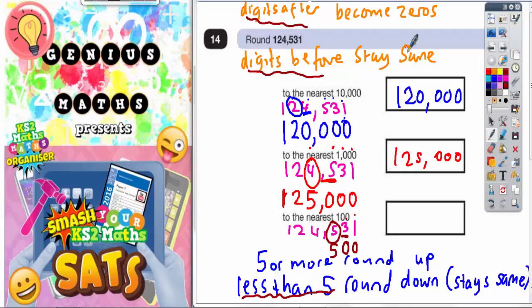And digits before the 5 stay as they are. So we've got a 1 stay as it is, a 2 stay as it is, and a 4 stay as it is. And then we just put a comma in. Final answer, 124,500.